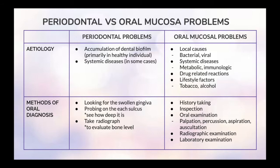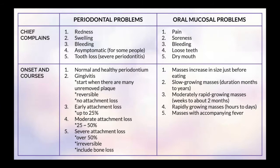Based on the methods of oral diagnosis, periodontal problems require clinicians to look for swollen gingiva, probing of each sulcus to see how deep it is, and taking radiographs to evaluate bone level. For oral mucosal problems, it requires history taking, inspection, oral examination such as palpation, percussion, aspiration and auscultation, histographic examination, and lab examination.